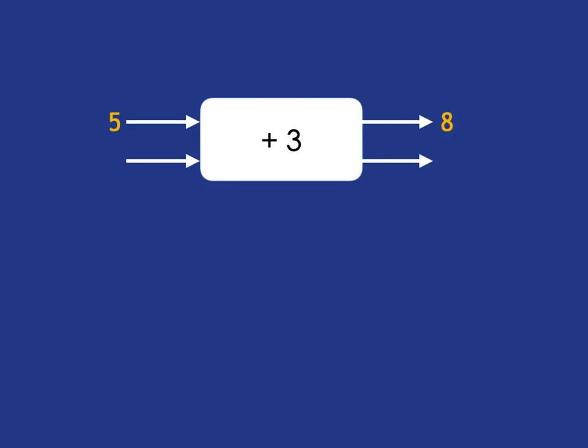Now the thing we want to be looking at today is what if we know the output, how do we get back to the input? So if we know the output is 4, what we're asking ourselves is what plus 3 will give me the answer of 4. And hopefully that's fairly obvious. The answer is 1.